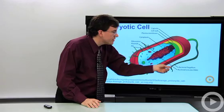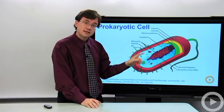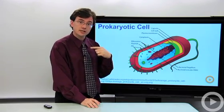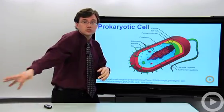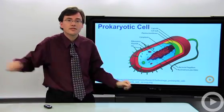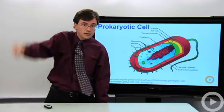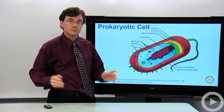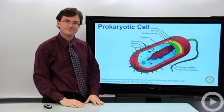One thing that is a little different on the outside is they have flagella, much like our cells do, but our cells use a motion called undulation. Bacterial flagella rotate like an outboard motor to make them go. That's a prokaryotic cell.